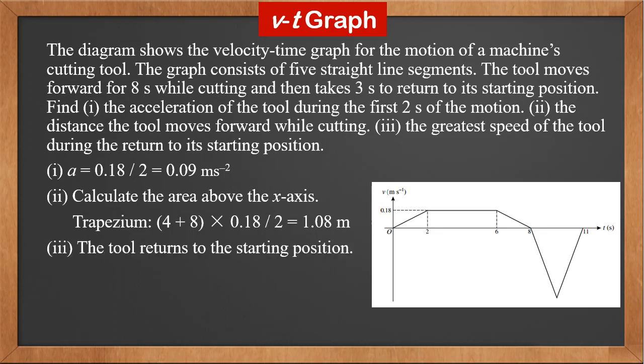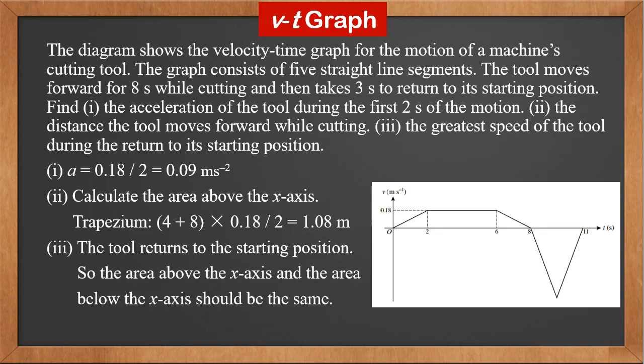Third, since the tool returns to the starting position, the displacement is 0. So the area above the x-axis and the area below the x-axis must be equal. The area below the x-axis is the area of a triangle, which is 3 times Vmax over 2. So Vmax is 0.72 meters per second.